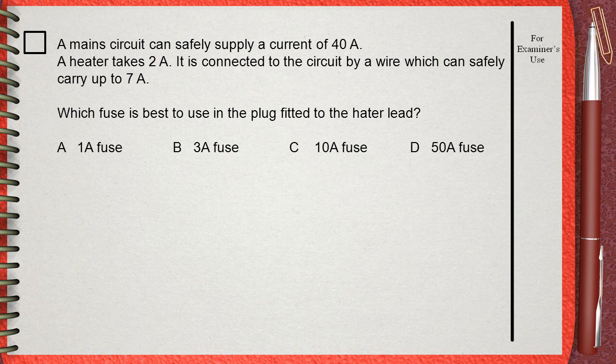We protect the heater itself. That's why when we choose a fuse, we don't care about the 40 Amperes of the supply or the 7 Amperes that can be carried by the wires. We are protecting the heater, so we only care about the 2 Amperes taken by the heater.